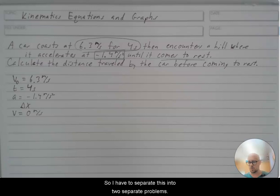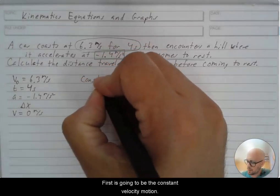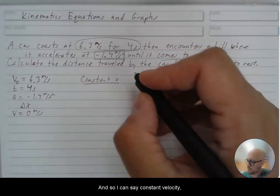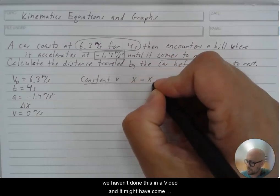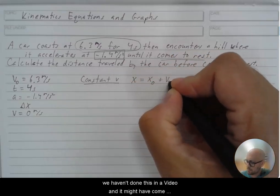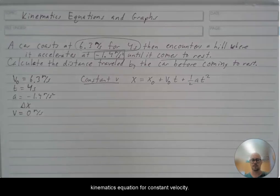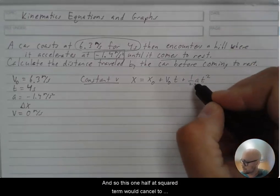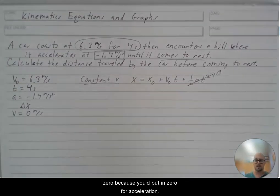So I have to separate this into two separate problems. First is going to be the constant velocity motion. And so I can say constant velocity. We haven't done this in a video and it might have come up for you already. But you can use this kinematics equation for constant velocity. Constant velocity means no acceleration. And so this one half at squared term would cancel to zero because you'd put in zero for acceleration.